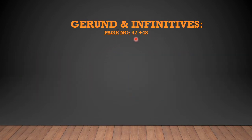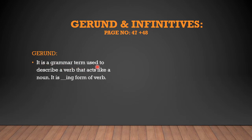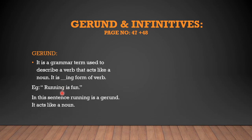Next is gerunds and infinitives, on page number 47 and 48. First, what is a gerund? A gerund is a grammar term used to describe a verb that acts like a noun. It is the -ing form of a verb — also called the fourth form. For example: 'Running is fun.' Here 'running' is a verb in its -ing form, but in this sentence it acts like a noun as the subject. So 'running' is the gerund.